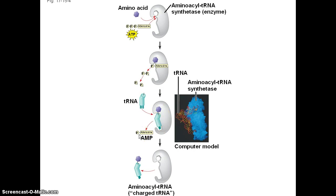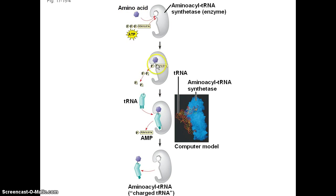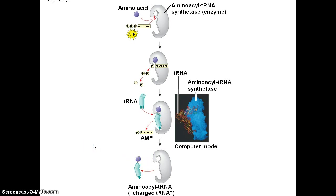We split out the AMP and change the conformation, and it dumps out the now charged tRNA. It's got its amino acid that it will transfer to the ribosome. So again, a specific amino acid attaches to the active site of the enzyme, tRNA with its own specific three-dimensional shape attaches to the active site, and then the amino acid is joined to the tRNA, and we now have a charged tRNA ready to transfer the amino acid to the ribosome.